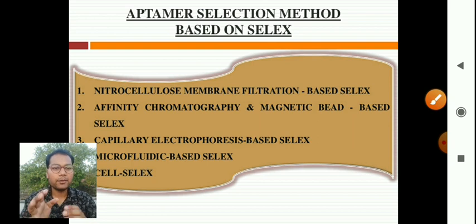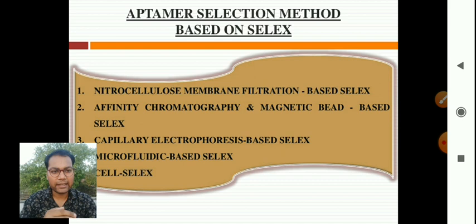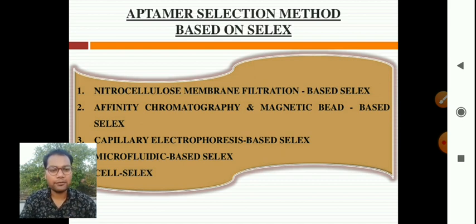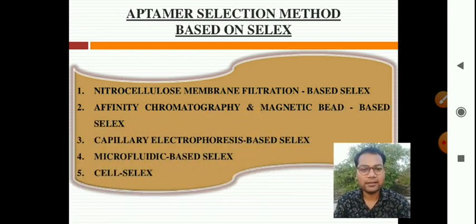Aptamer selection methods based on SELEX include: nitrocellulose membrane filtration-based SELEX, affinity chromatography and magnetic bead-based SELEX, capillary electrophoresis-based SELEX, microfluidic-based SELEX, and cell SELEX.